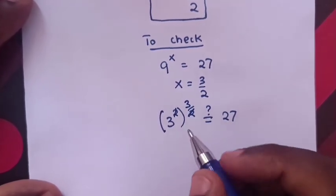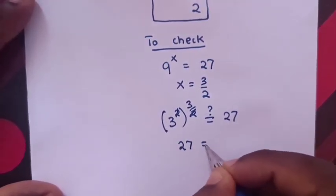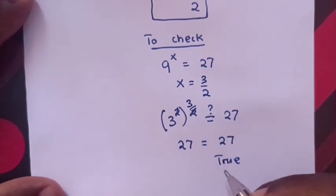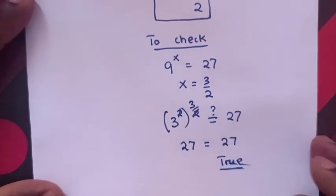So, it will be 3 power 3, which is 27. Is equal to 27. So, it's true for the value of x, which is 3 over 2.